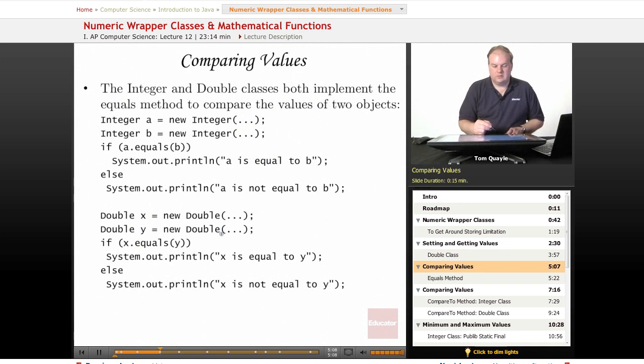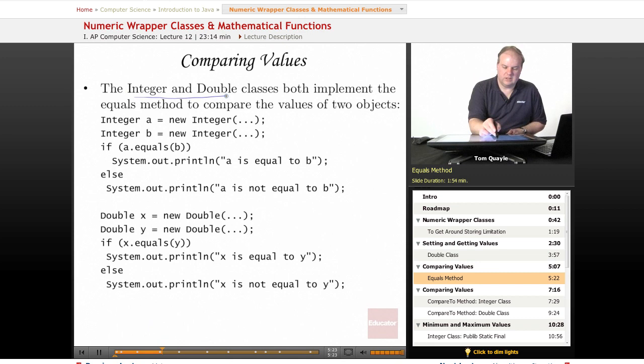All right, so there's more that we can do with these wrapper classes than just set and get values. We can compare the values of two objects of one of the wrapper class types. The Integer and Double classes both implement the equals method to compare the values of two objects. We've seen the equals method on other objects such as strings.